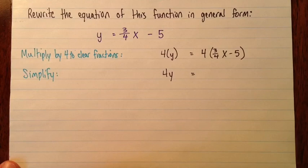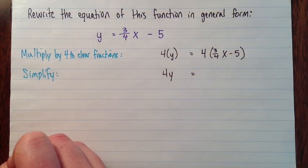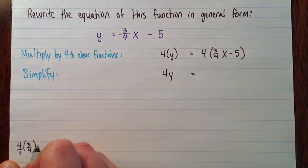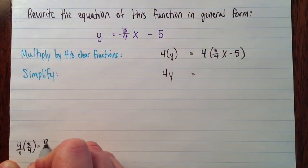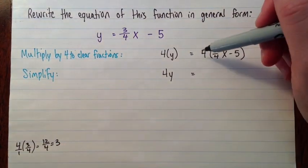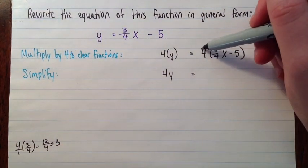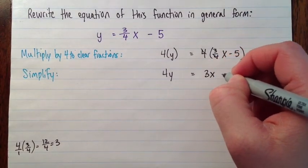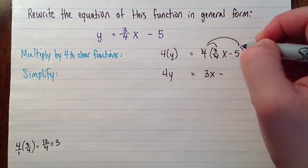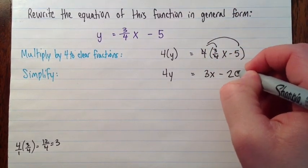Or we could go off in the corner of the page somewhere and say we have 4 times 3 quarters. So remember to multiply fractions. If you've got a whole number, you put that over 1. Then multiply the numerators, the tops, and multiply the denominators. And then simplify. Which is the same as if we just consider that these two are undoing each other. So we have 3x minus 4 times 5 gives us minus 20.